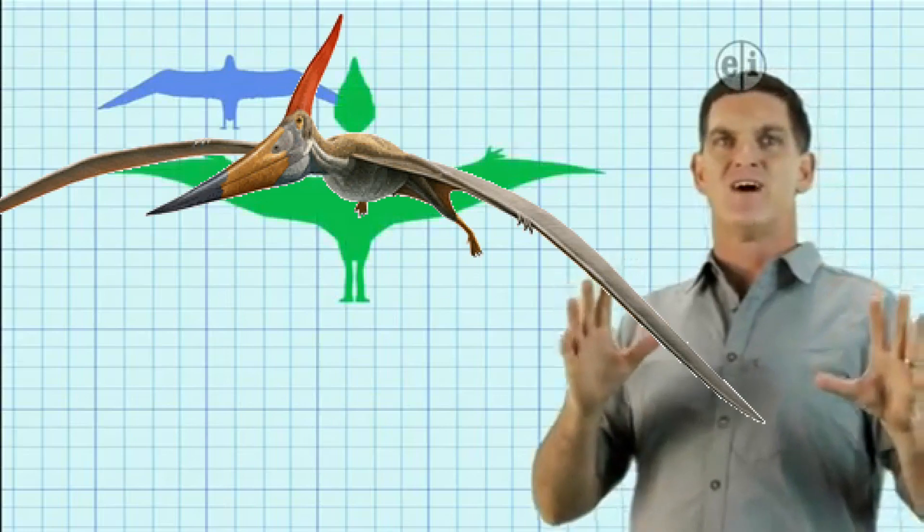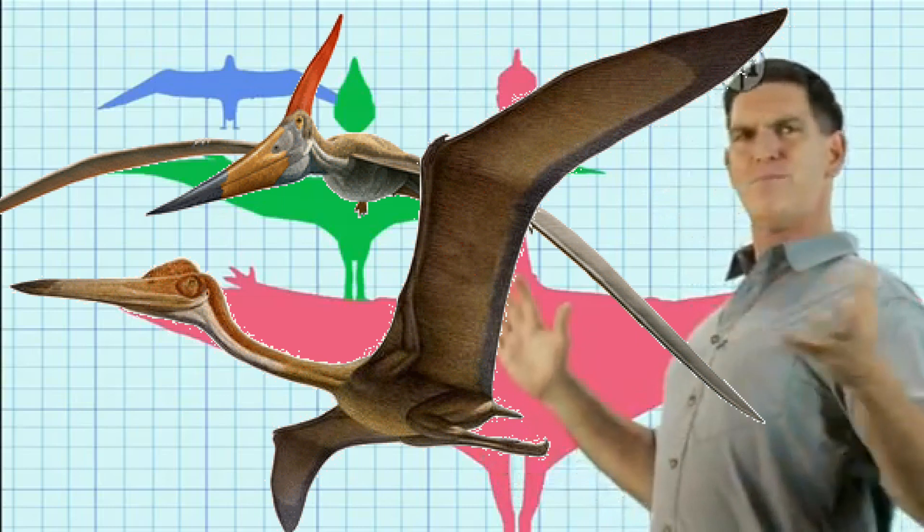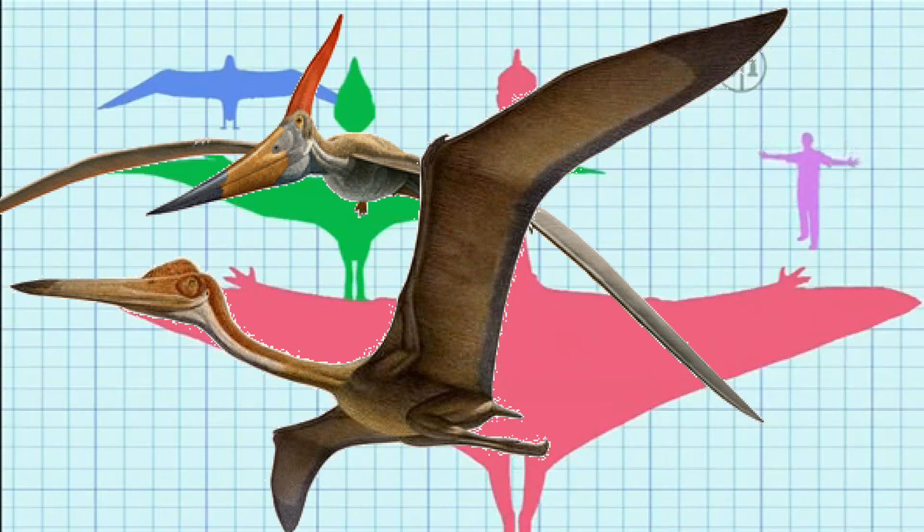Now let's look at the largest pterosaurs. Pteranodon had a wingspan of more than 20 feet, and Quetzalcoatlus was even bigger, with a wingspan of up to 40 feet.